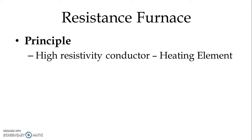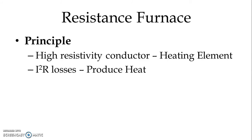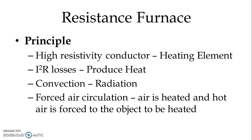We use a high resistivity conductor as a heating element. When we apply supply to the heating element, current I will pass through it, I squared R losses will be generated, and then it will produce heat. The heat, by way of convection or by way of radiation, will be transferred to the charge. In most resistance furnaces, we use forced air circulation — air is heated and hot air is forced onto the object to be heated.